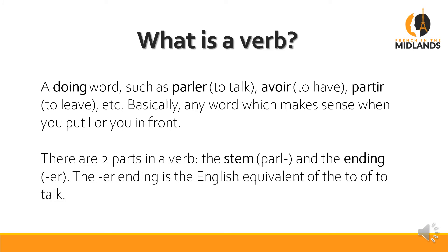In French there are two parts in a verb: the stem — P-A-R-L of 'parler' — and the ending, which is the 'er' of 'parler'. The 'er' ending is your English equivalent of the 'to' in 'to talk', except in French we stick it to the end. That's why when you say 'I talk' you have to remove the 'er', because in English you don't say 'I to talk'. So it's the same in French.